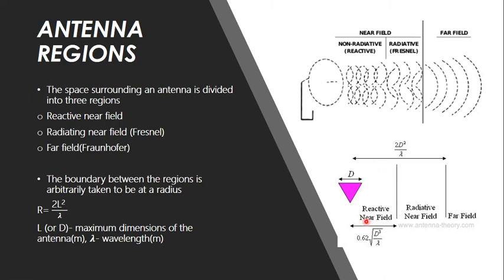This diagram shows a more detailed classification. The reactive near field region extends to a radius of 0.62 times the square root of D³ divided by λ. From the antenna to that boundary is the reactive near field region. Any region from the antenna to a radius of 2D² by λ is called the radiative near field region. Once we cross the radius of 2D² by λ we enter the far field region where the actual radiations begin.